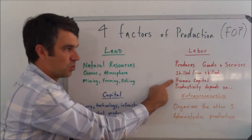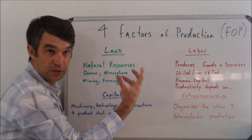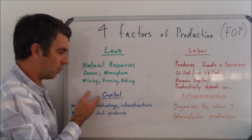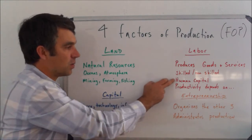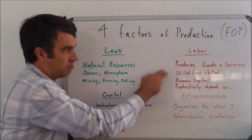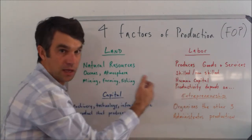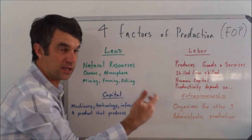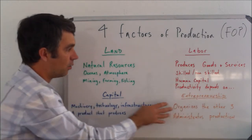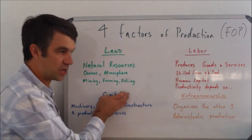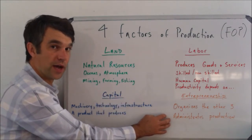Another name for labor is what we call human capital. That becomes a useful term, especially when we couple it with what we call physical capital, which we'll talk about in a moment. We can call it human capital basically as a synonym. The productivity of labor — meaning how much is produced by a single laborer — is going to be dependent on all of the other three factors, but especially physical capital and entrepreneurship.